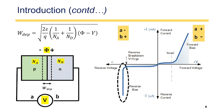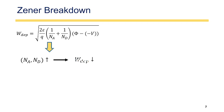The depletion region width W can be calculated from a formula that depends on three main parameters: acceptor concentration N_A, donor concentration N_D, and the total potential applied across the diode. If N_A and N_D are increased — meaning a heavily doped semiconductor — the depletion region width is reduced. When we apply sufficient reverse bias voltage, it adds to the built-in potential φ, making the total applied potential very high, which subsequently creates a huge electric field across the PN junction.